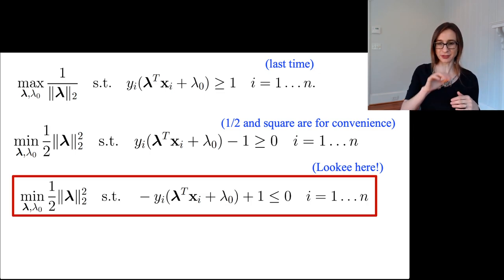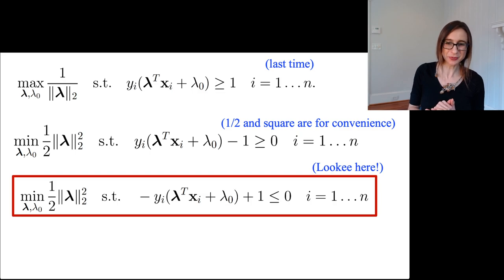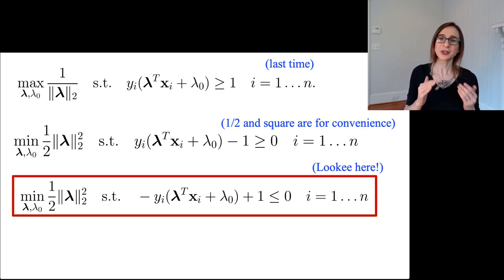To get from the second line to the third line, I just put all the terms from the constraints on the less than side. Then we should get really happy because our optimization problem is now in the form of exactly what we studied in the convex optimization lecture.